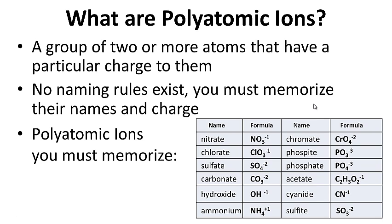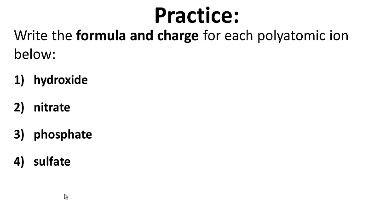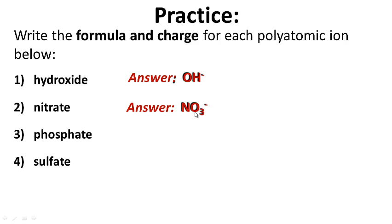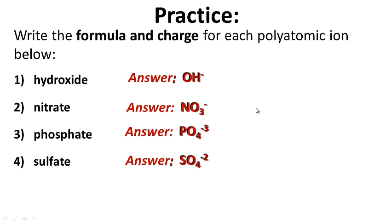For your notes: what are polyatomic ions? Please write these down because you will need to memorize them. Practice: write the formula and charge for each polyatomic ion. The answers are: hydroxide is OH minus one; nitrate is NO3 with a minus one charge; phosphate is PO4 with a minus three charge; and sulfate is SO4 with a minus two charge.